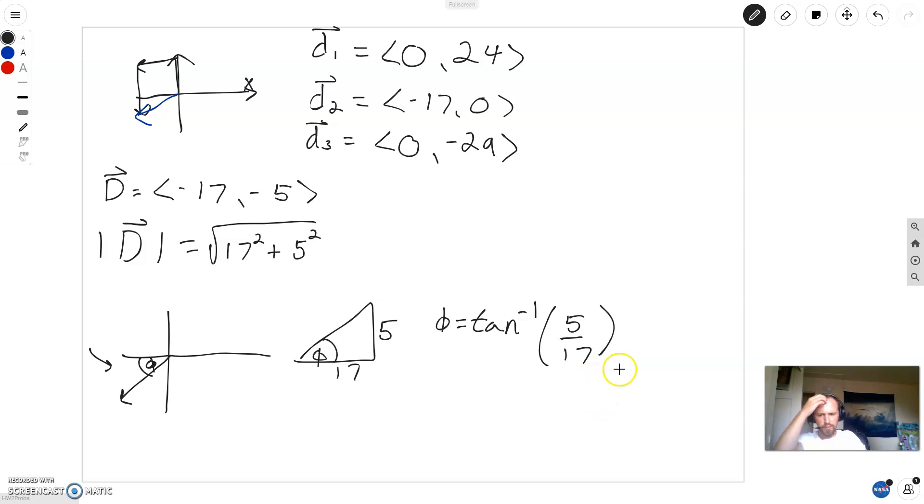I expect I should get a pretty small angle, because this x coordinate is kind of dominating here. It's almost pointed directly to the left, so it should be pretty small. Let's see what it comes out to be. Tangent inverse, 5 divided by 17, I get 16 degrees. 16.4 degrees.